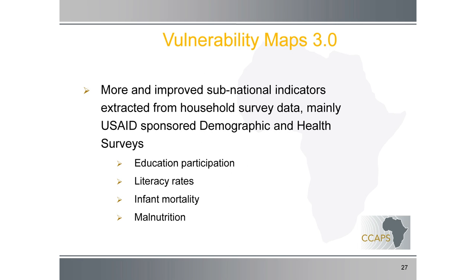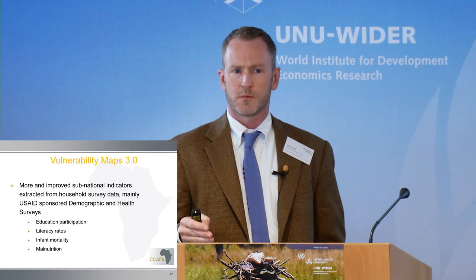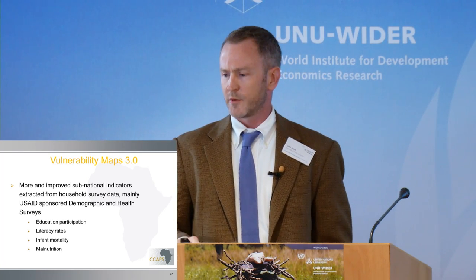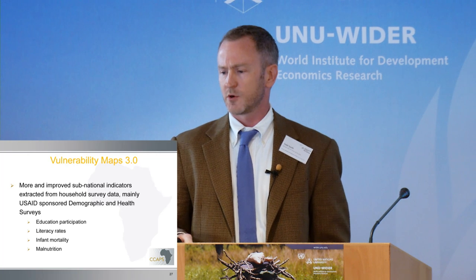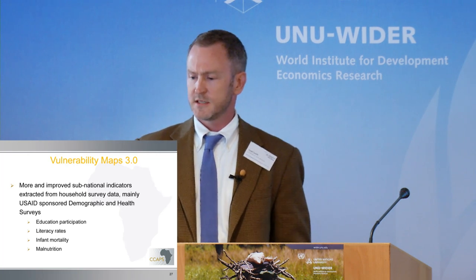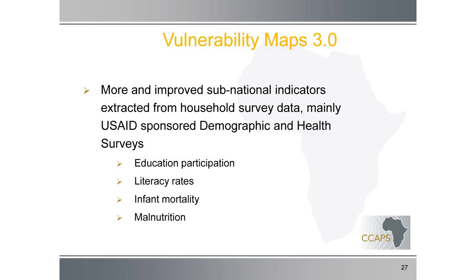We also have more and improved sub-national indicators extracted from sub-national household surveys, predominantly USAID-sponsored Demographic and Health Surveys. Now instead of just a couple of indicators at the sub-national level in that basket, we have many more — in fact, most of them. Education, literacy rates, infant mortality, and malnutrition are all now at the sub-national level.